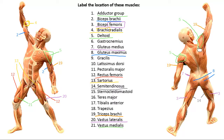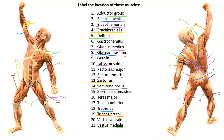Next to the deltoid is trapezius — the big trapezoid-shaped muscle on your back. Just below trapezius is latissimus dorsi, another relatively large muscle. In between the deltoid and trapezius/latissimus dorsi, we have the teres muscles. Teres major is the larger one, and teres minor is the tiny one. Infraspinatus is also in this region — it gets its name because it's below the spine of the scapula.